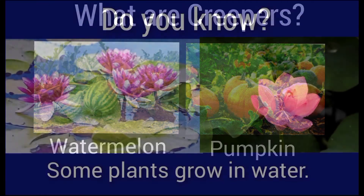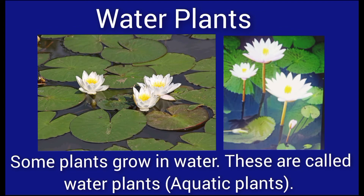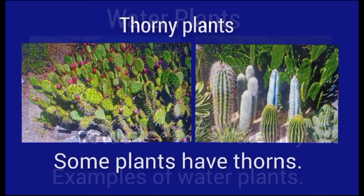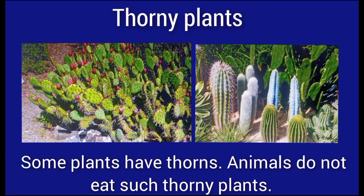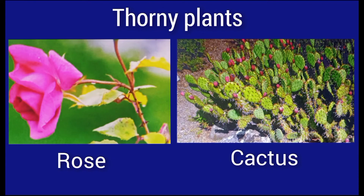Some plants have thorns, so animals do not eat such plants. These plants are called thorny plants. Cactus and rose are examples of thorny plants.